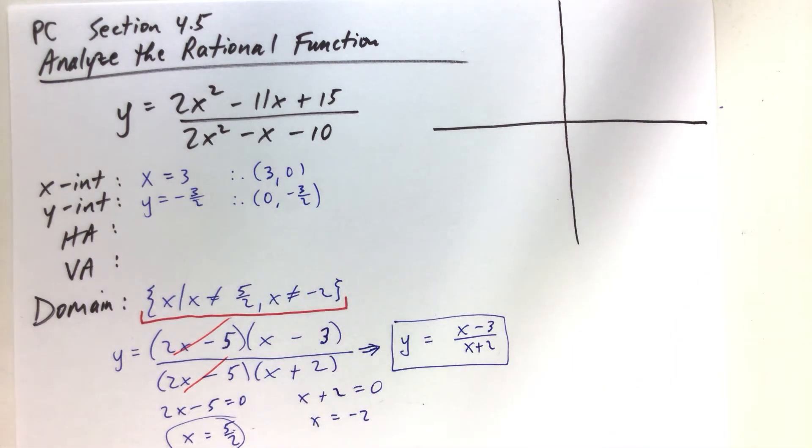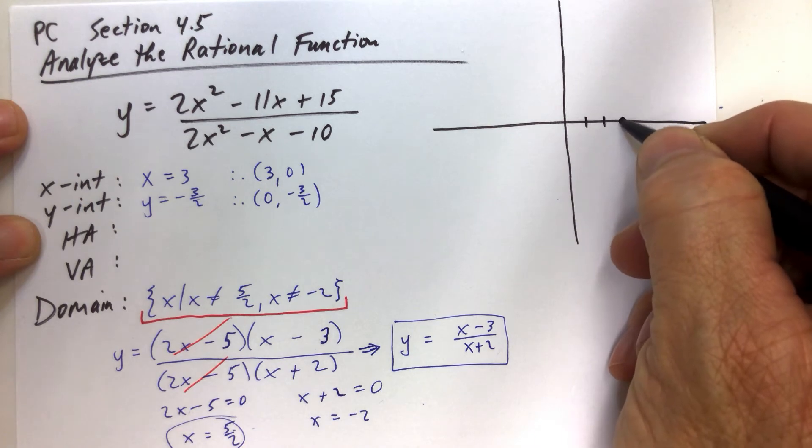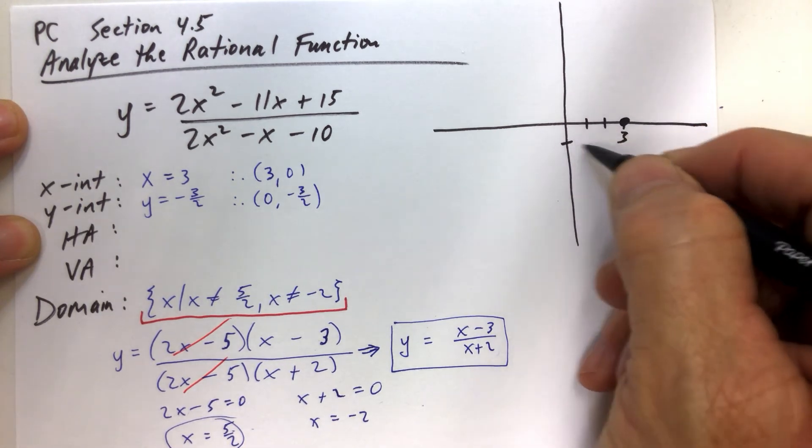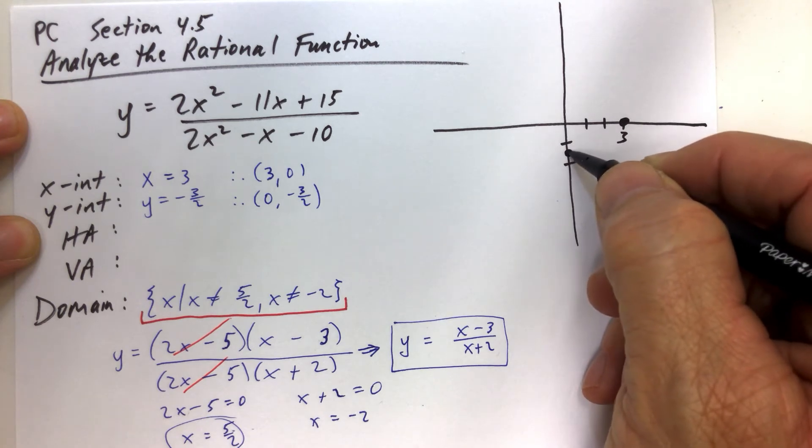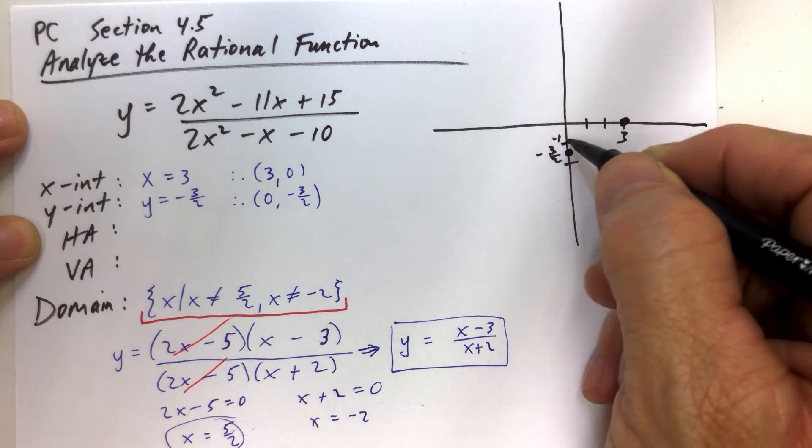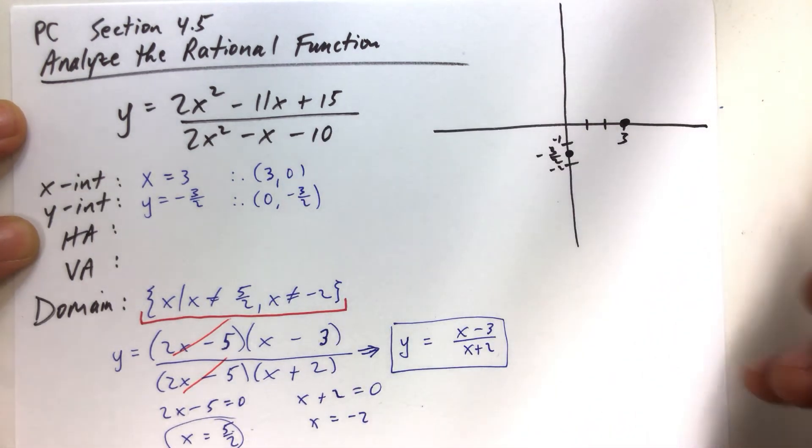And we can go ahead and plot those points as well while we're at it. So we have 3, 0, put a dot there. And then we have 0, negative 3 halves. Negative 3 halves is negative 1 and 1 half. So that's negative 3 halves. So negative 1 there, negative 2 there. So we know the graph of this function goes through those two points.